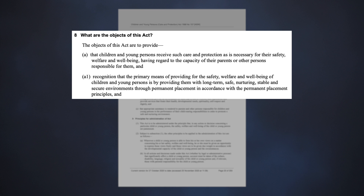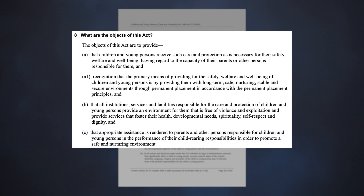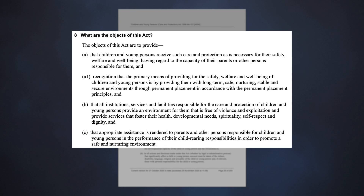Section 8 sets out the objects of the Act. These can be summarised as: children receive such care and protection as is necessary for their safety, welfare and wellbeing. The primary means of ensuring the safety, welfare and wellbeing of the child is by providing them with a long-term, safe, stable and nurturing environment through permanent placement in accordance with the permanent placement principles. Institutions, services and facilities looking after children must provide an environment free of violence and exploitation that fosters the child's physical and emotional needs. Parents and other people responsible for children should be provided with assistance to promote a safe and nurturing environment.